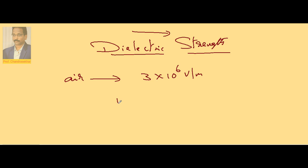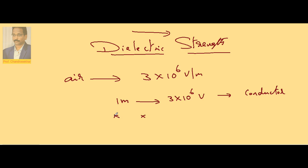That means, if two points are separated by 1 meter and you apply a potential difference of 3 × 10⁶ volts, the air between these two points behaves like a conductor. Take two points separated by 1 meter distance, maintain a potential difference of 3 × 10⁶ volts between them, and you can observe the passage of electricity — through air also, electricity passes.